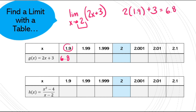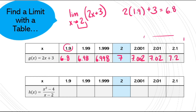1.99 is closer. If I do that math again, g(x) is going to have a value of 6.98. If I get super close, g(x) has a value of 6.998. The beauty of this function is it's continuous at 2, so I can put 2 into the equation and I'm going to get 7. From the other side: put 2.1 into the equation, I get 7.2; getting closer with 2.01 gives 7.02; and at 2.001 you can see I'm getting closer and closer to the value 7 for g(x) as x approaches 2.